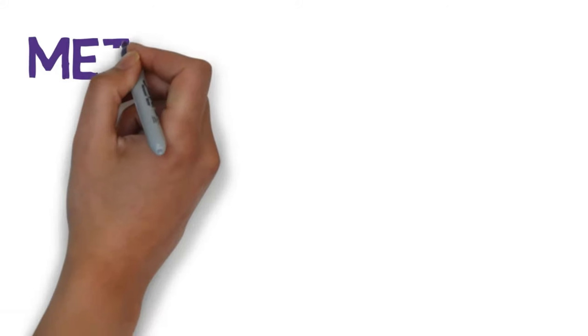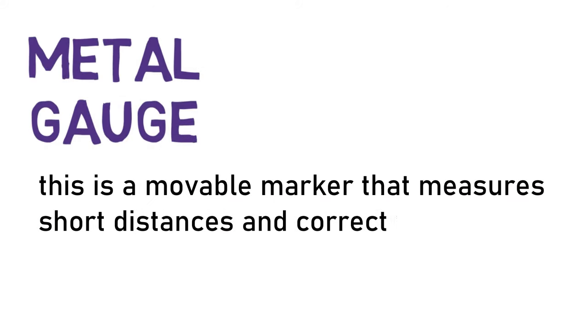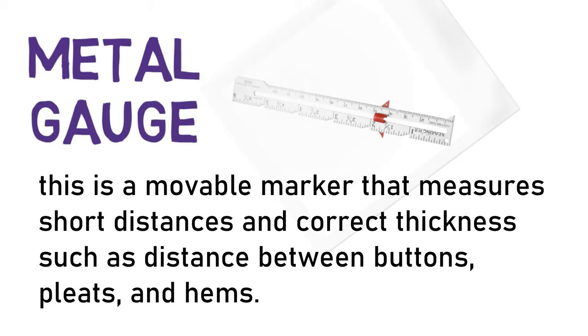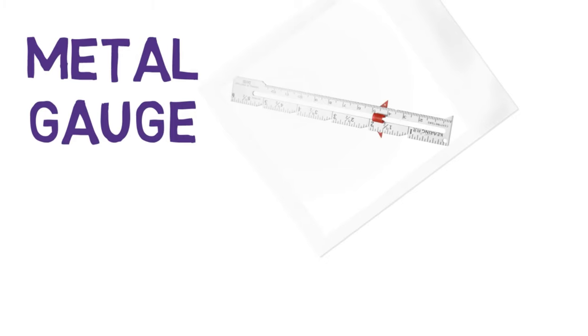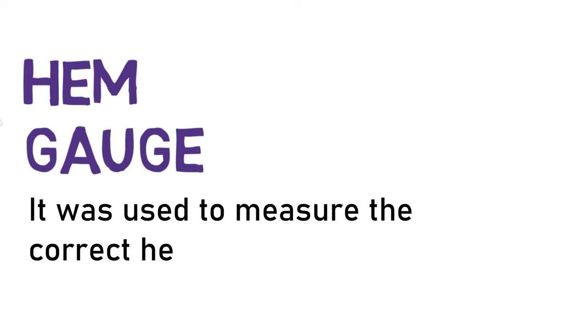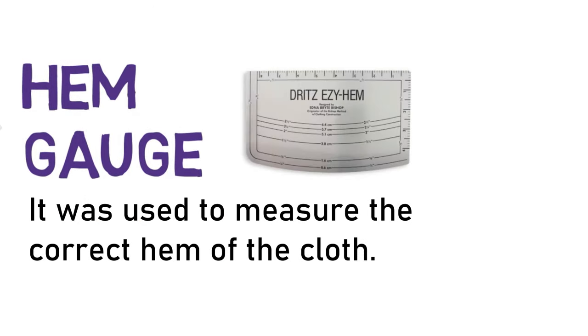Metal gauge. This is a movable marker that measures short distances and corrects thickness, such as distance between buttons, pleats, and hems. Hem gauge. It is used to measure and correct the hem of the cloth.